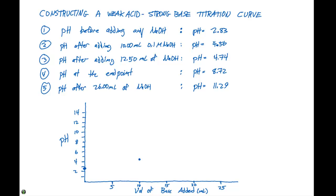When we do 12.5 milliliters of sodium hydroxide, our pH equals 4.74. Then when we look at the pH at the endpoint, that would be adding 25.0 milliliters of sodium hydroxide. Our pH is going to be 8.72.